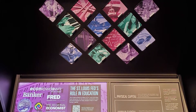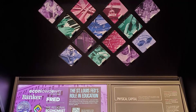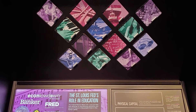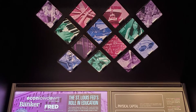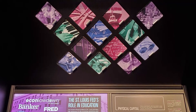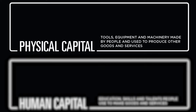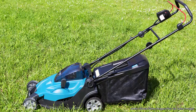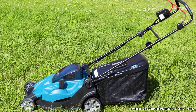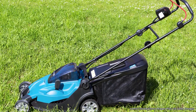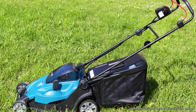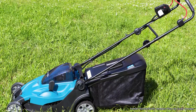The terms physical capital and human capital may sound complex, but they are actually fairly simple. Physical capital represents the tools, equipment, and machinery used to produce goods and services. Let's say you run a lawn care business — the lawn mower and trimmer you use on the job are examples of physical capital.